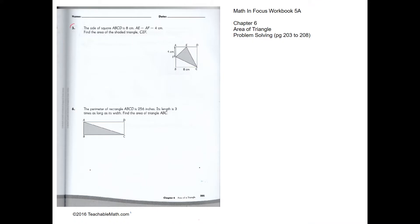Problem solving question 5: find the area of the shaded triangle CEF. Instead of finding it directly, we find the area of the whole square and subtract the unshaded regions. The area of the square is 8 times 8, which equals 64.